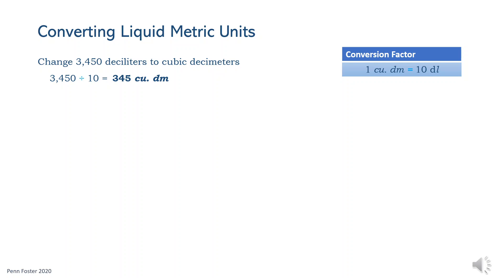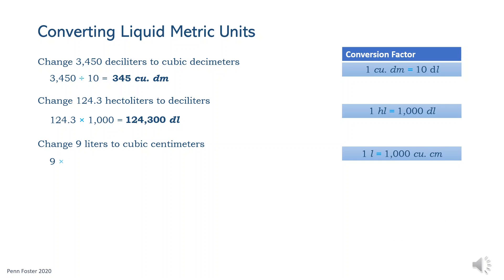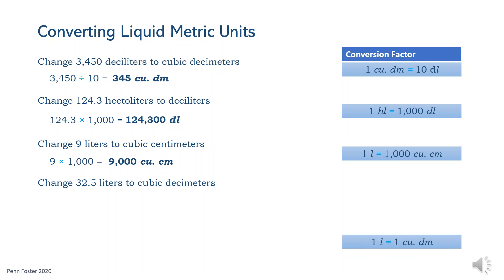For the next one, bring in the conversion relation for hectoliters and deciliters. Multiply the volume times 1,000. 124.3 hectoliters contain 124,300 deciliters. For the following problem, multiply the given liter volume times 1,000 to convert it to cubic centimeters. The answer is 9,000 cubic centimeters. Finally, since 1 liter is the same volume as 1 cubic decimeter, 32.5 liters is equivalent to 32.5 cubic decimeters.